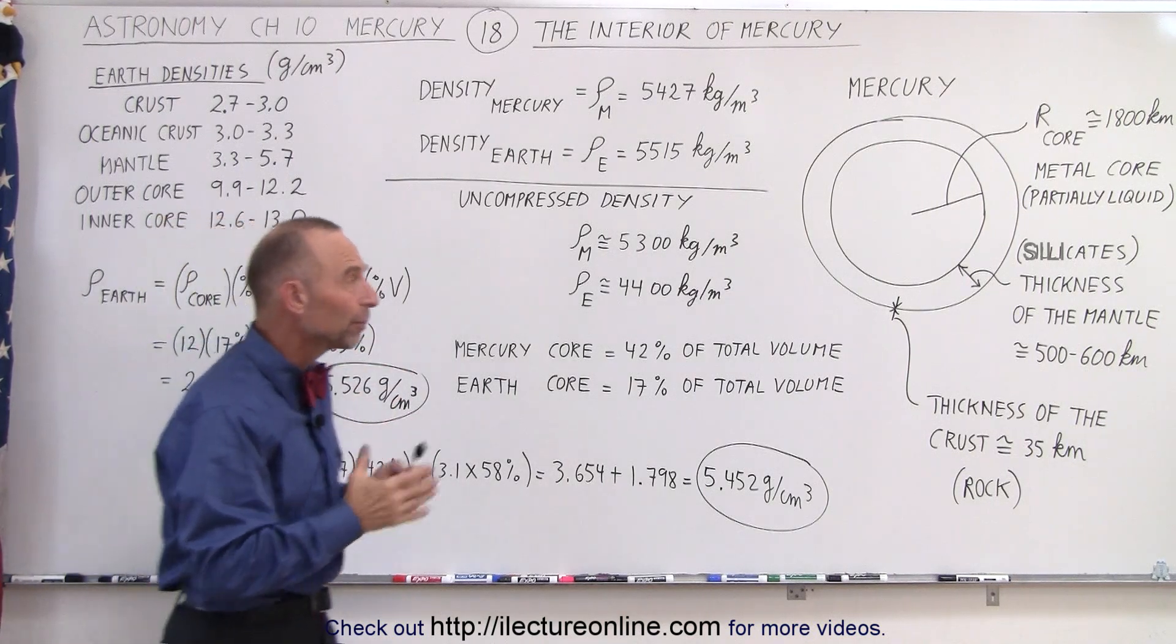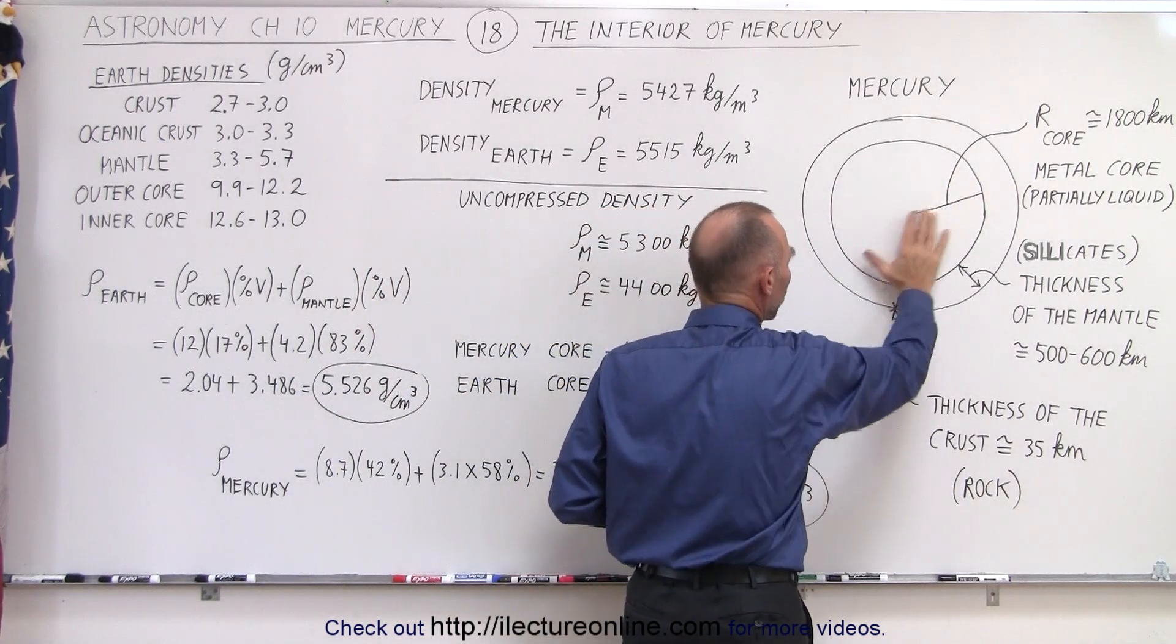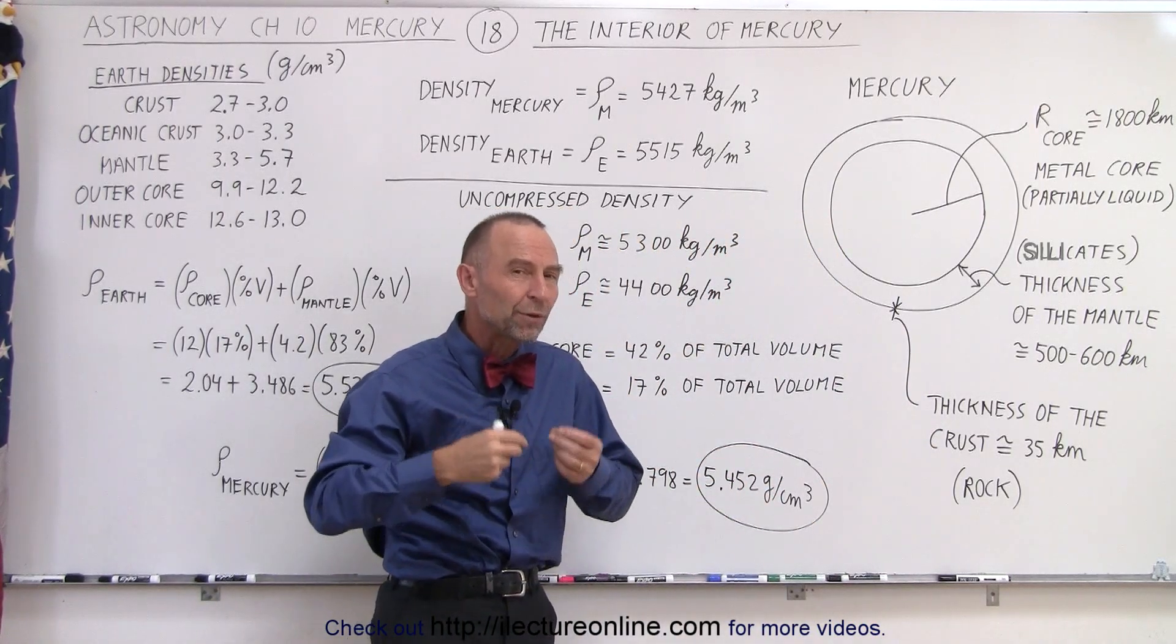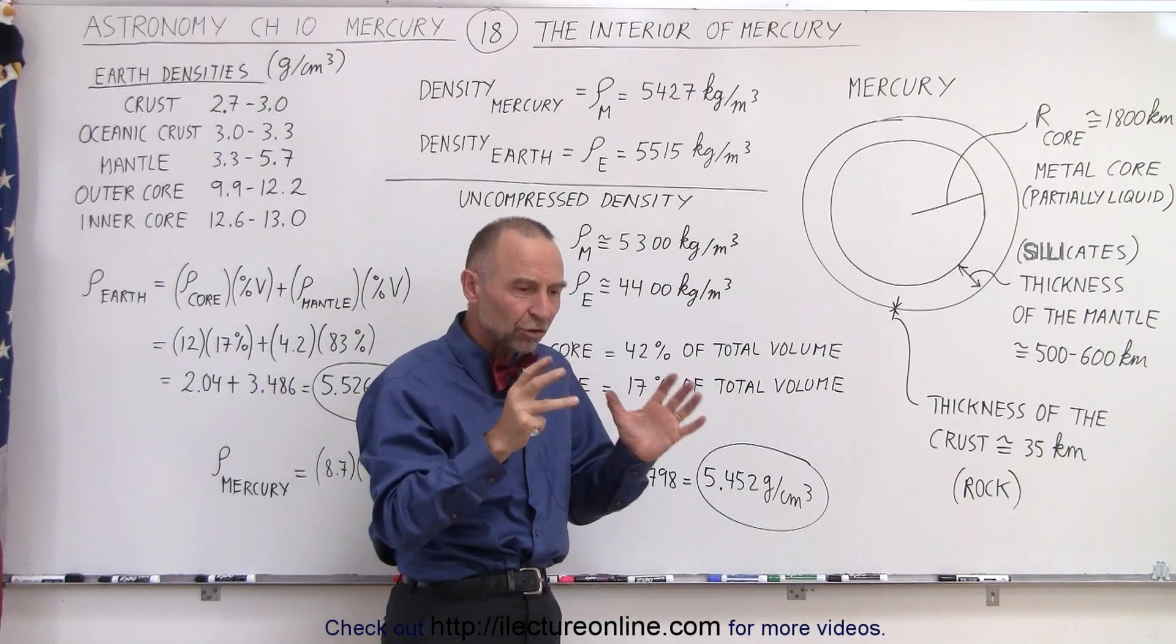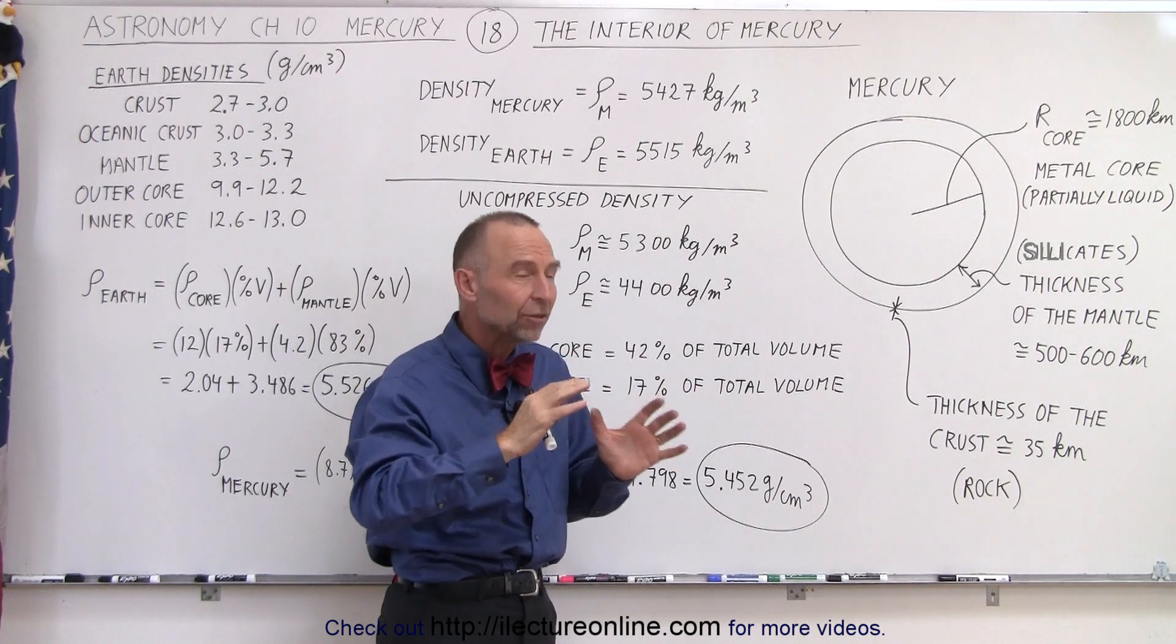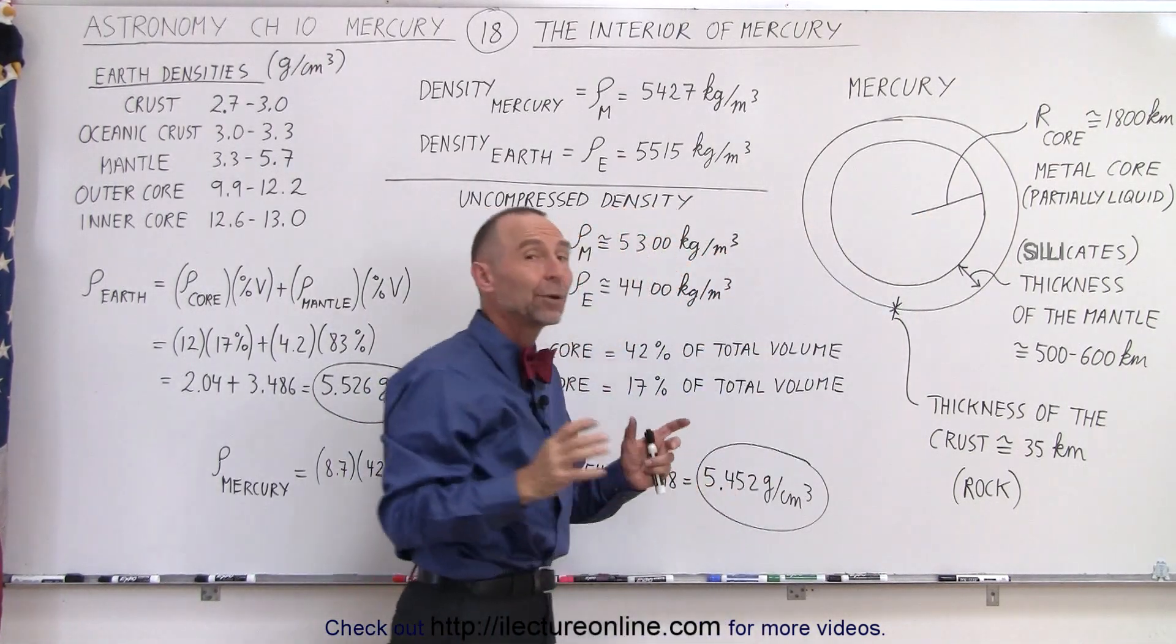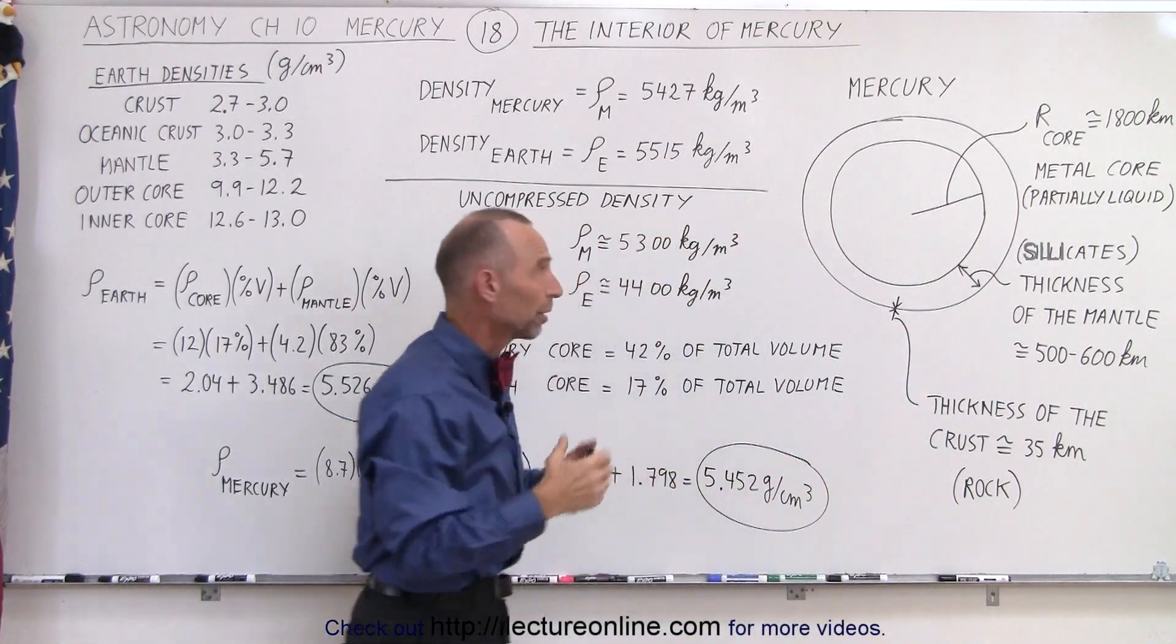So basically the planet has three regions. In the interior we have a very large core which contains primarily metal and primarily iron. Because of what we found, we were able to measure the rotational speed of the planet very accurately and we noticed some wobbling, some aberrations in that rotational speed. And therefore we assume that partially the metal core must be partially liquid or partially molten.